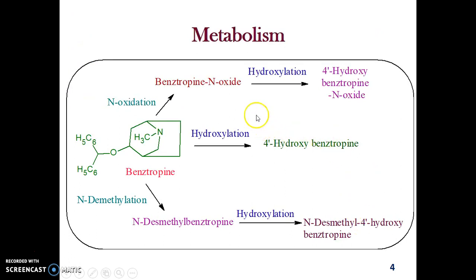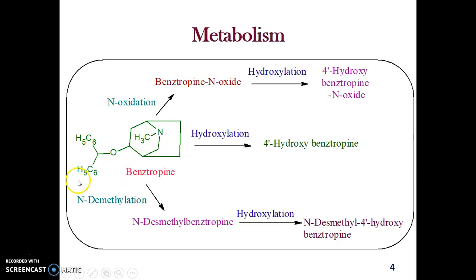Coming to the metabolism of benzotropin, these are some of the possible metabolic pathways given in the literature. Benzotropin undergoes both phase 1 and phase 2 biotransformation reactions. In phase 1, it undergoes hydroxylation: the para carbon of the phenyl group (the 4-prime position) gets a hydroxy group introduced, giving 4-prime-hydroxybenzotropin. N-oxidation is also a phase 1 reaction, converting the nitrogen to benzotropin N-oxide. Additionally, N-demethylation removes the N-methyl group of the tropin ring system, giving N-demethylbenzotropin.